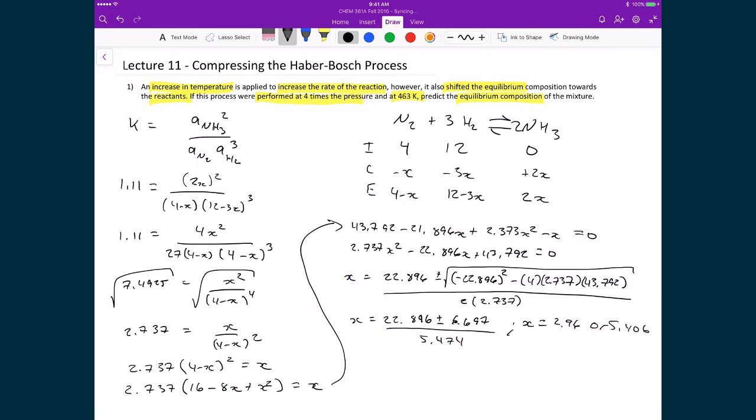And again I go back up to my starting point. Here I've got 4 minus x as the equilibrium pressure for the nitrogen gas.